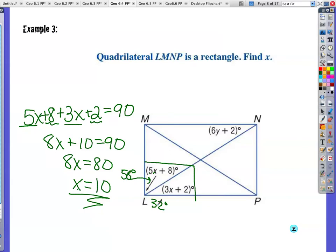And if you recall earlier, this angle right here is going to be congruent to this angle right here due to the fact that we have parallel lines. They're alternate interior angles. So 6y plus 2 is equal to 3x plus 2, but we know that that's 32 degrees. So 6y equals 30. So now y equals 5.